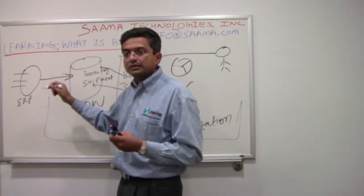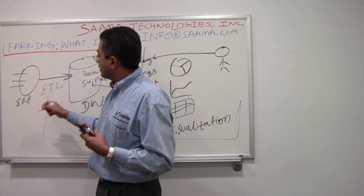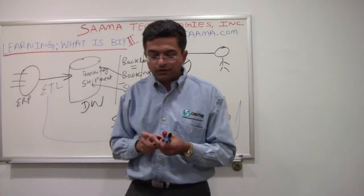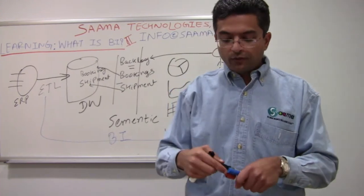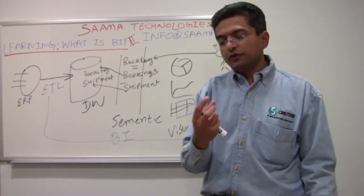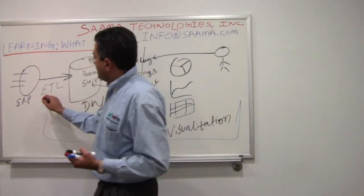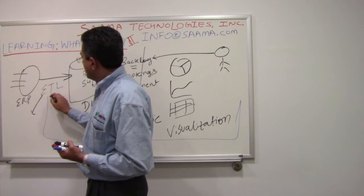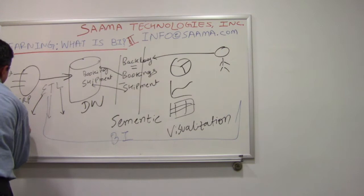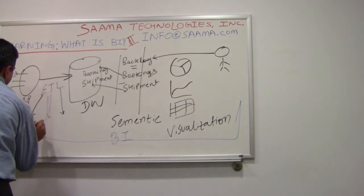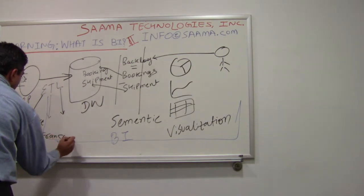The first stage in that process, which is the extraction process, is termed as ETL. There are some variations of this term like ELT and so on, which we'll get into a little later. But currently focusing on the first term, ETL, which is the most commonly used term. E stands for extraction, T for transformation, L for loading — extract, transform, and load.